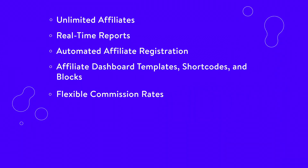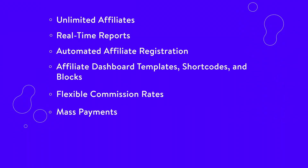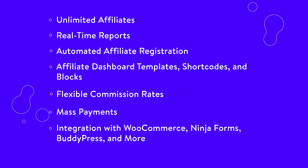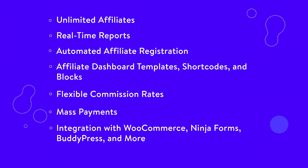Additional features include flexible commission rates, mass payments, and integration with WooCommerce, Ninja Forms, BuddyPress and more. Affiliates by ItThinks is recommended for business owners who need a free plugin for creating an affiliate program. You can fully set up your affiliate program using the free plugin; however, Affiliates Pro provides a more detailed dashboard with referral rates and expert features, starting at $49 for a single site.